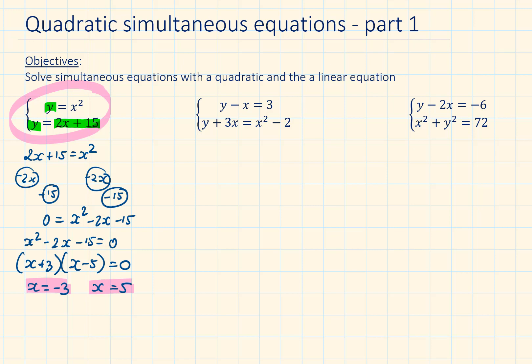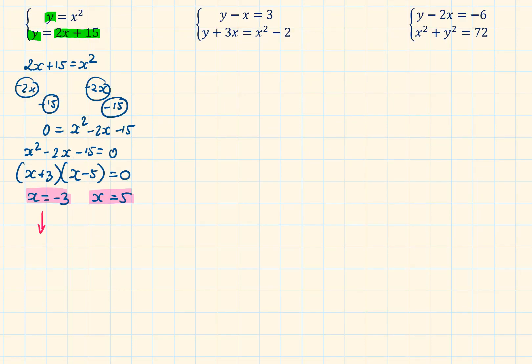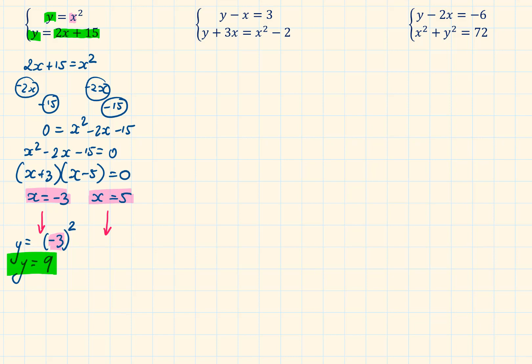Both equations have y as the subject of the formula: y equals x squared, and y equals 2x plus 15. So both will be quite easy to substitute, and it doesn't matter which one you pick — the solution will be the same. Always look for the simplest one. When x equals minus 3, we have y equals minus 3 squared, which gives y equals 9. When x equals 5, y equals 5 squared, which is 25.